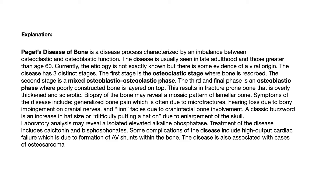The disease has three distinct stages. The first stage is the osteoclastic stage where bone gets resorbed. The second stage is the mixed osteoblastic-osteoclastic phase. The third and final phase is the osteoblastic phase where poorly constructed bone gets layered on top. These stages result in fracture prone bone that's overly thickened and sclerotic. Biopsy may reveal a mosaic pattern of lamellar bone. Symptoms include generalized bone pain due to microfracturing, hearing loss due to bony impingement on cranial nerves, and lion facies due to craniofacial bone involvement. The classic scenario is an increase in somebody's hat size or difficulty putting a hat on, basically due to enlargement of the skull.